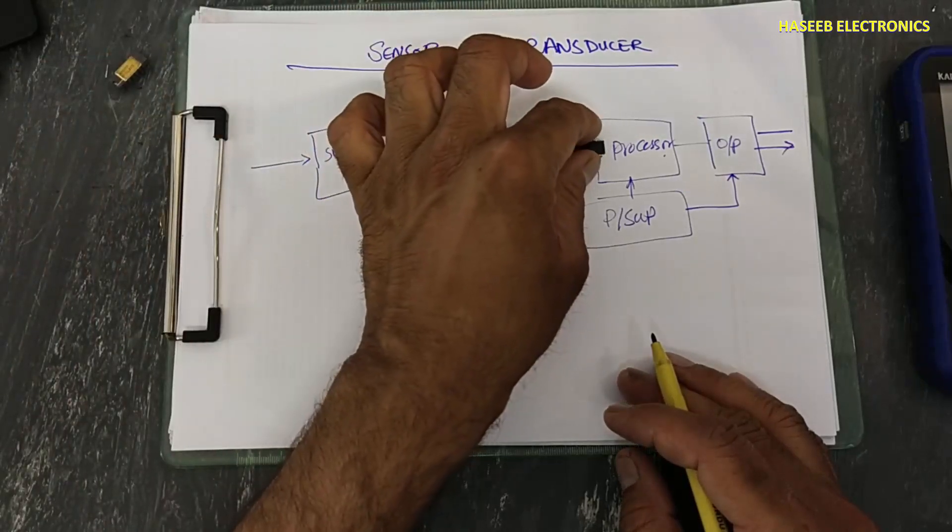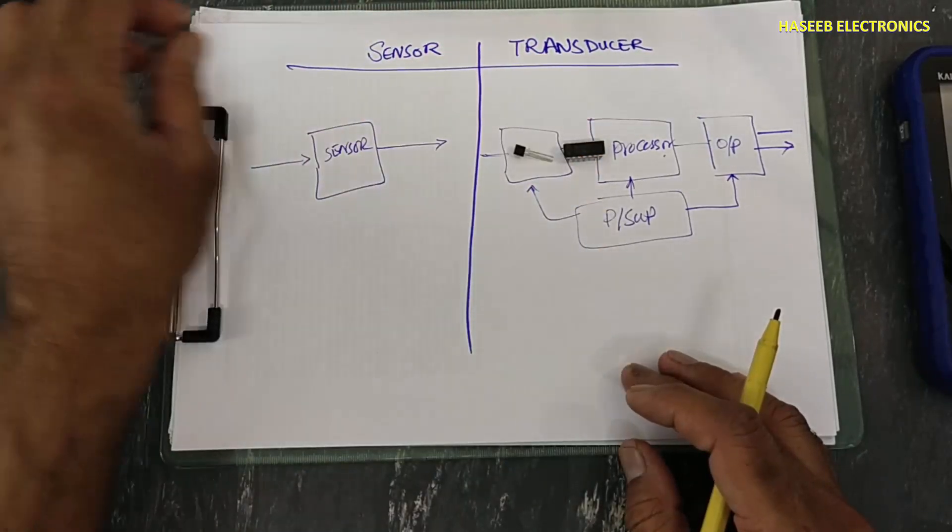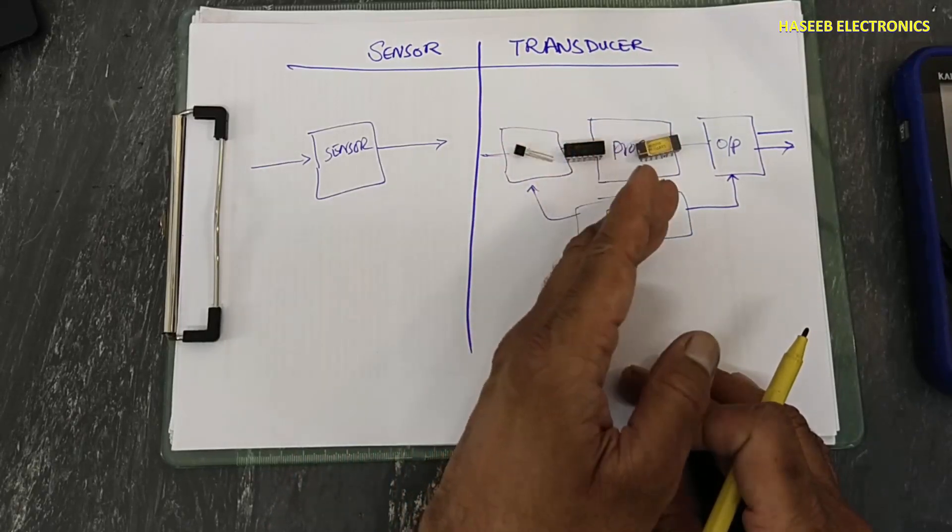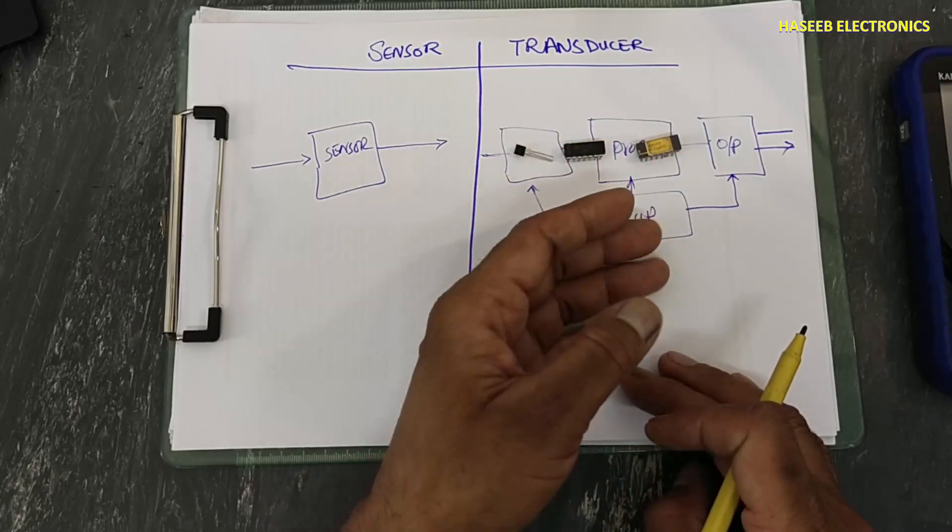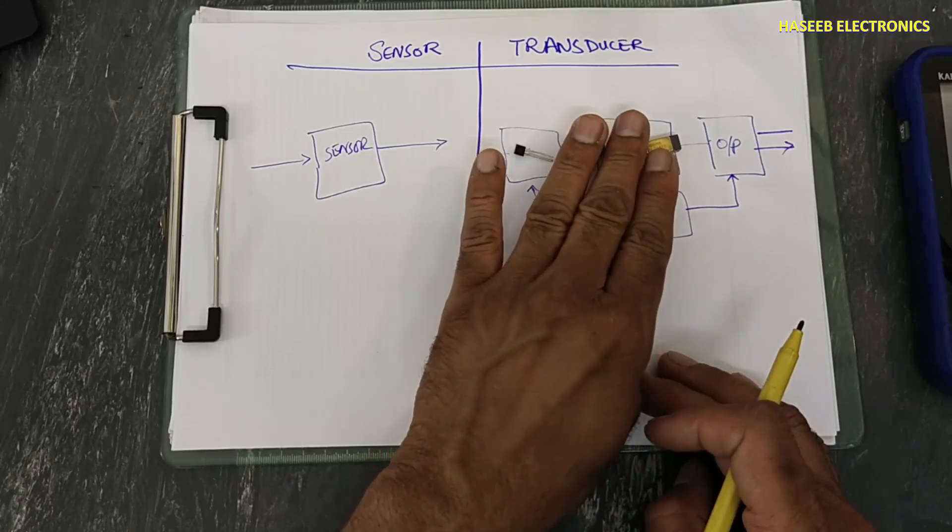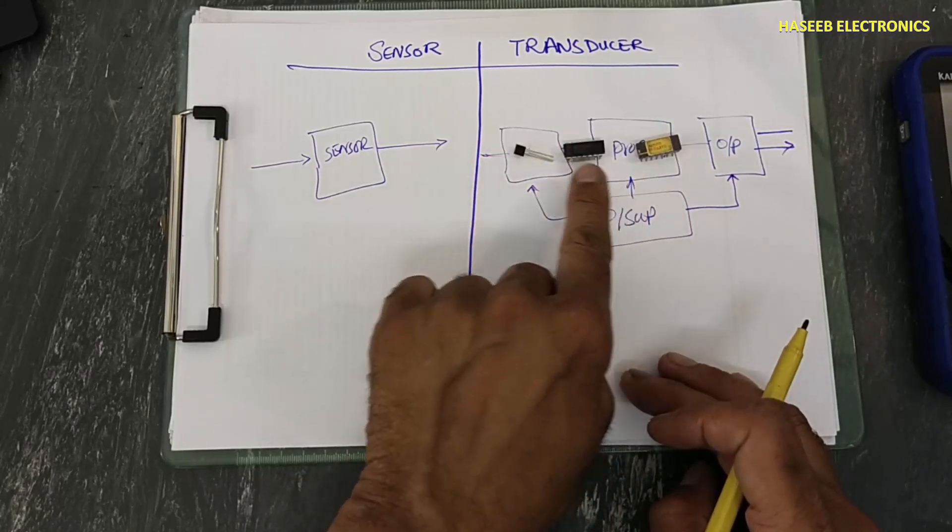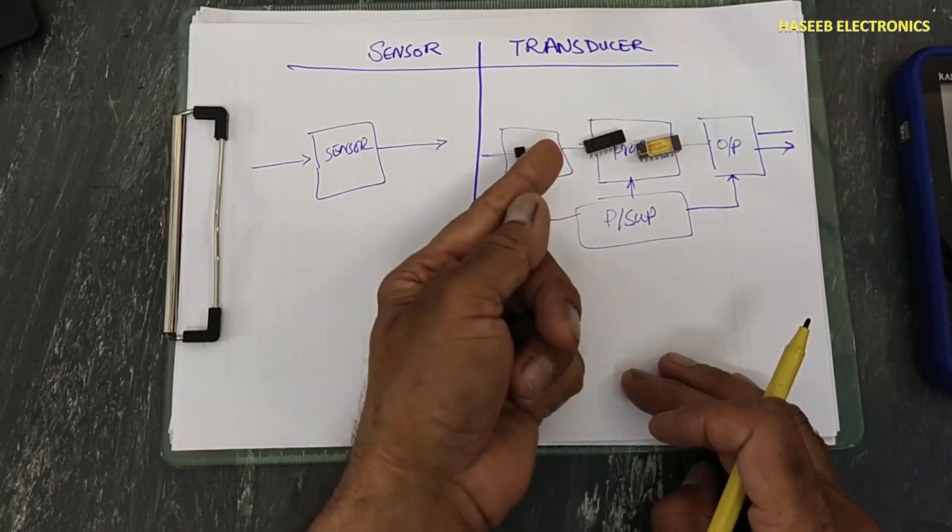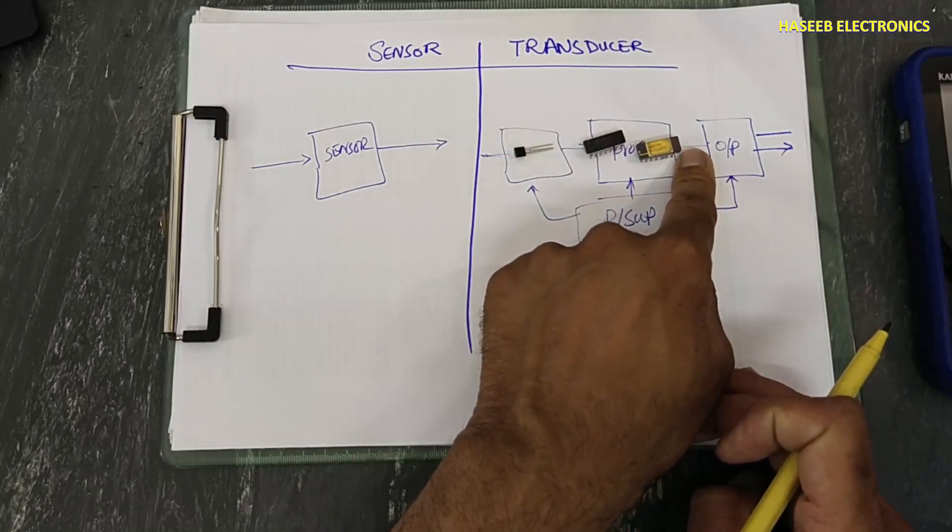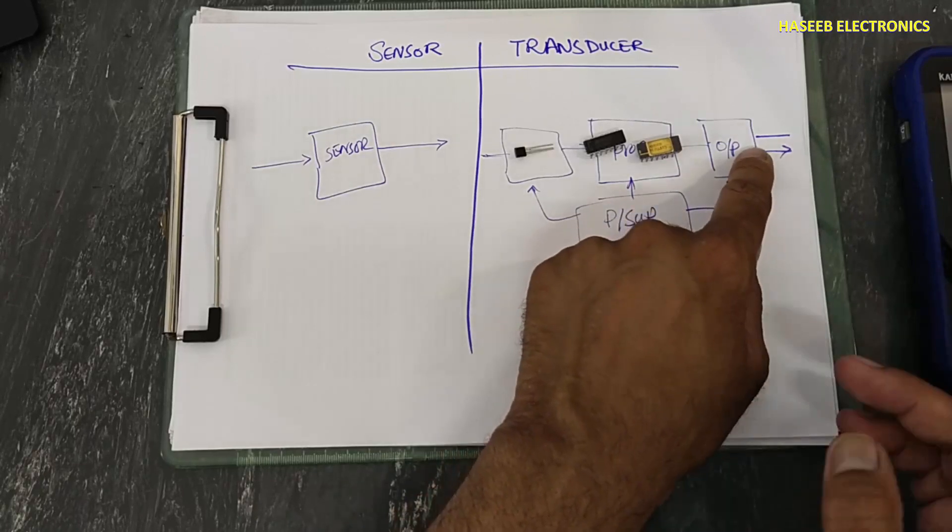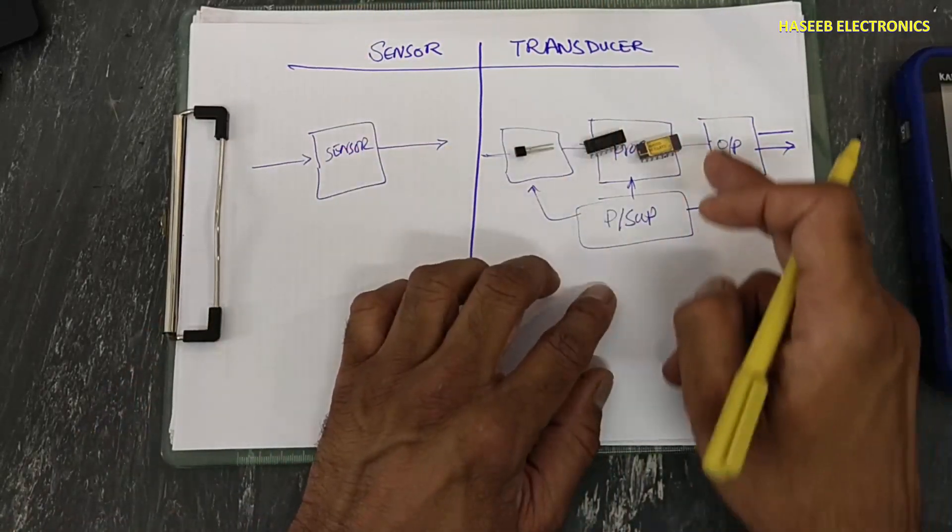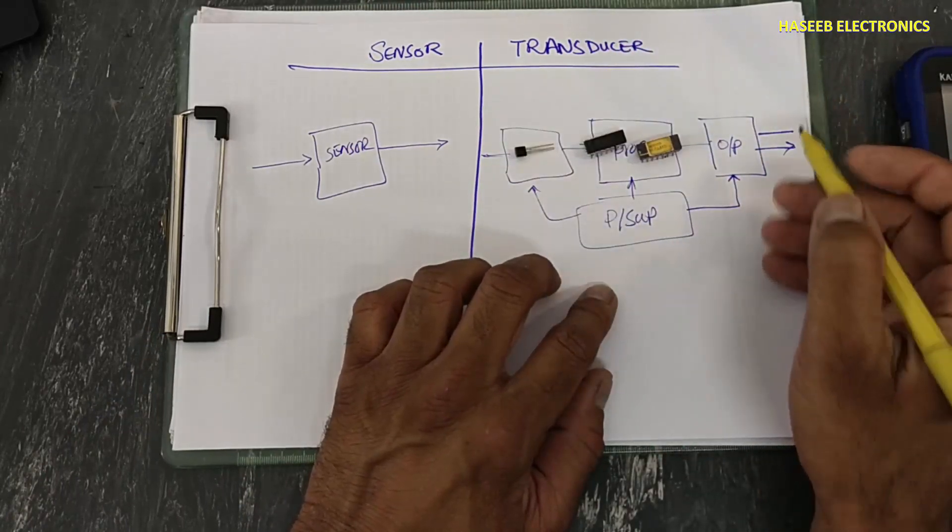Same temperature sensor, we process through operational amplifier, then any A to D converter, any microprocessor, microcontroller, microcomputer, any type of conversion device that will convert this electrical signal, that weak electrical signal into another form of energy that is readable for other devices.